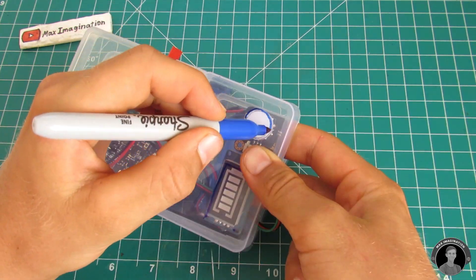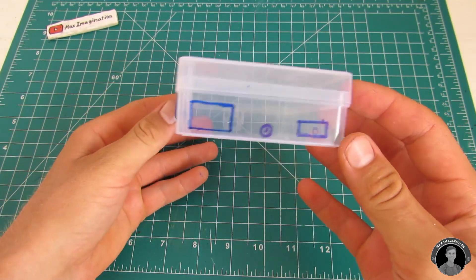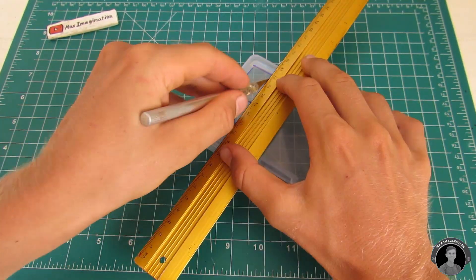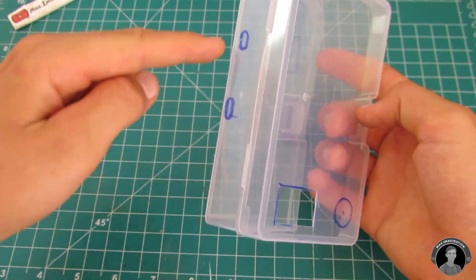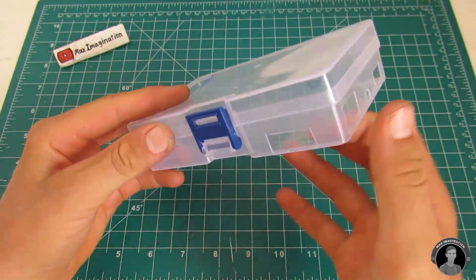Before mounting anything to the container be sure to mark out and cut some appropriately sized holes and gaps for all the parts to poke through. This is just about how it should look.